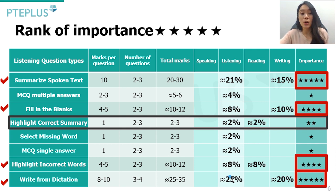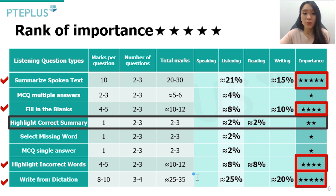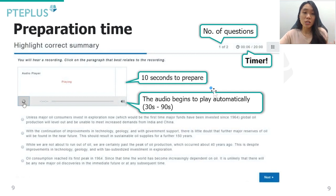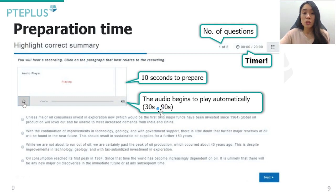Keep in mind that getting just one word correct in Write from Dictation is one mark — the same as an entire Highlight Correct Summary question — so it's much easier to gain marks there. You also have 10 seconds of preparation time before the audio starts playing automatically. Use that time wisely to position yourself for the question. The audio runs for about 30 to 90 seconds, followed by the summary options at the bottom.